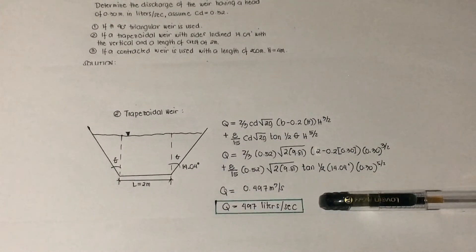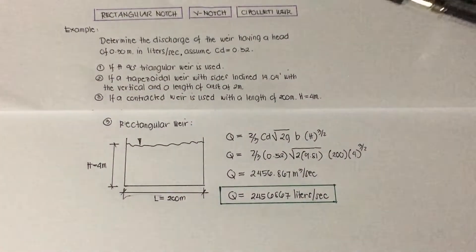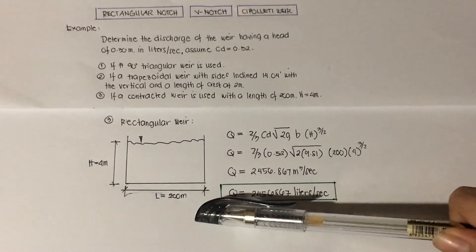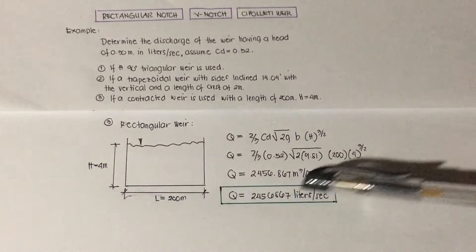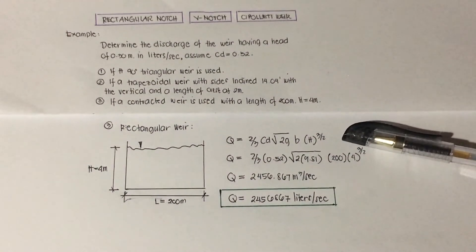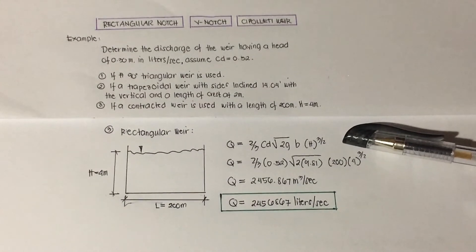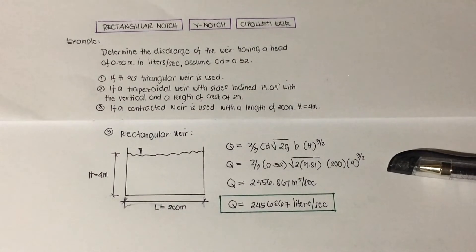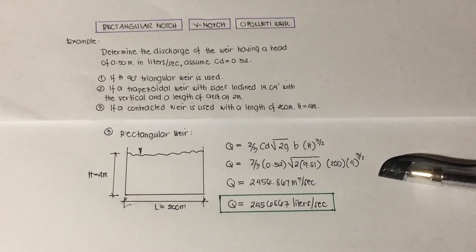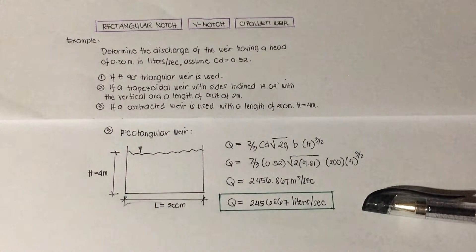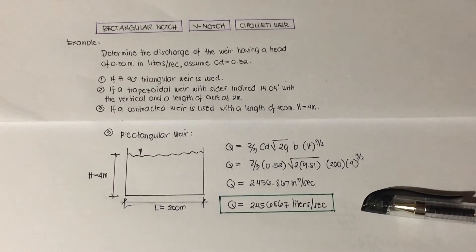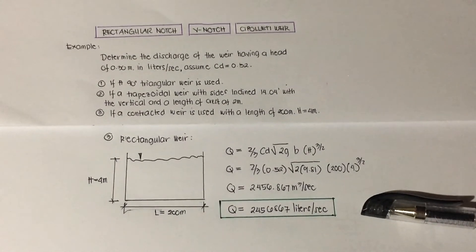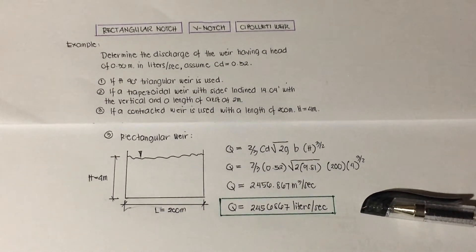For number three, the coefficient of discharge is the same at 0.52. From the given figure of the rectangular weir, the head is 4 meters and the base is 200 meters. Since velocity approach is neglected, we use the rectangular weir formula. Substituting the values of Cd, g, base, and head, then calculating and converting to liters per second, the final answer is 2,456,867 liters per second.